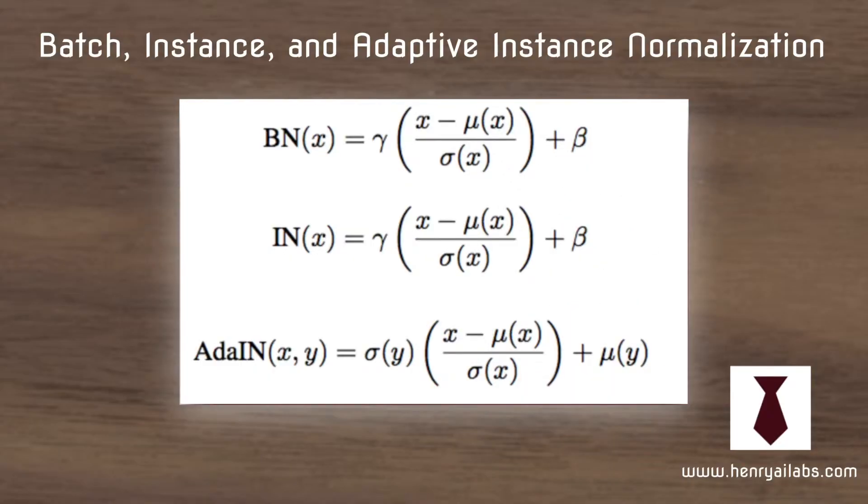So now we'll talk about the difference between batch normalization, instance normalization, and adaptive instance normalization. This is a really important thing to understand for the StyleGAN model.